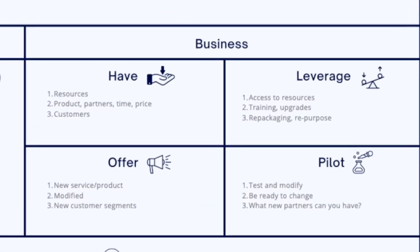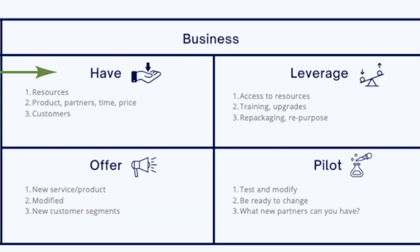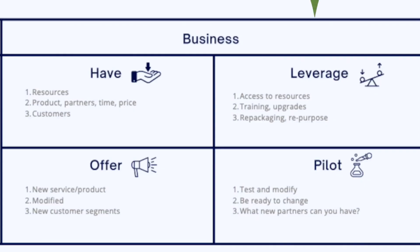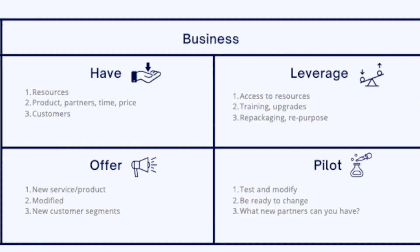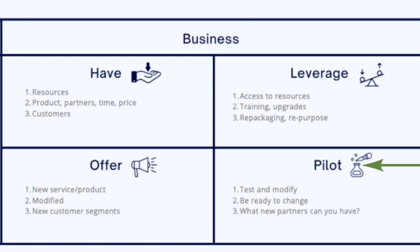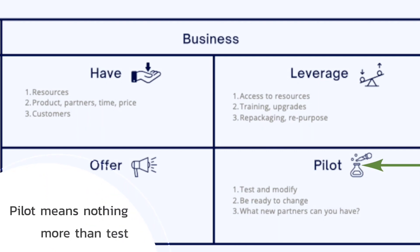Under the business module, there are four boxes. The first is what you have — what do you have today. The second is what can you leverage — what things could be leveraged with what you have. The third is what can you offer — a product, a service, a new offer, or to new customers. The last one is pilot, which simply means test.